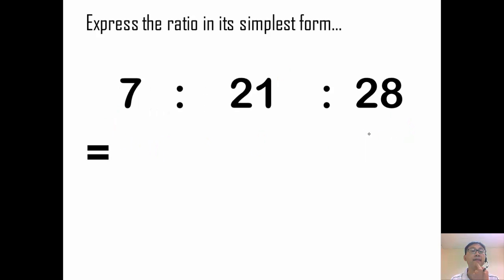Why don't you try it? Let's see whether you can do it. Let's see. 7, 21, 28. What is the common factor here? Ah, 7. So let's see. Divide by 7. If I divide by 7 here, I can divide by 7 here as well. So 7 divided by 7 gives me 1. 21 divided by 7 gives me 3. 28 divided by 7 gives me 4. So 1 is to 3 is to 4. And that's my answer.